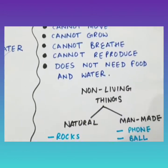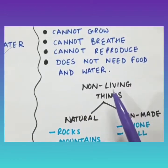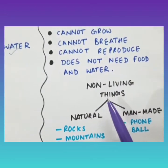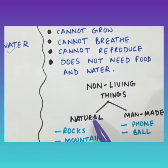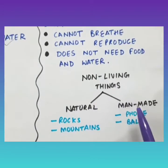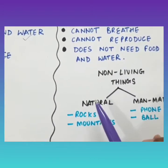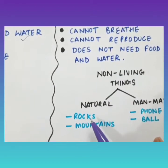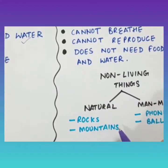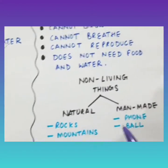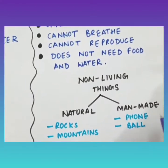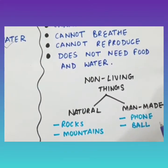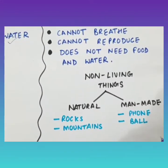Students, non-living things are divided into two categories: natural and man-made. Natural non-living things — for example, rocks and mountains. Man-made non-living things — for example, mobile phone, ball, and many more.